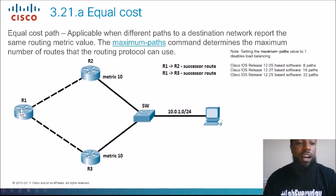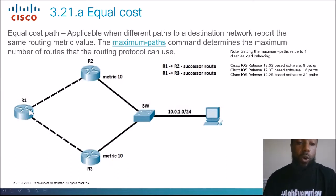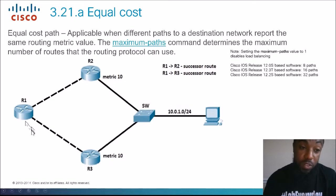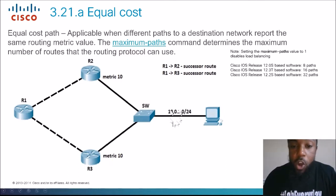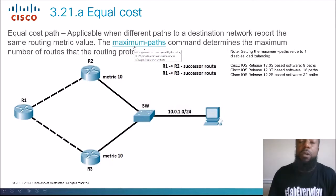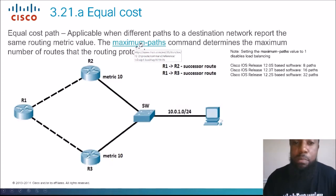Router 1 to Router 2 is a successor route, and Router 1 through Router 3 is also a successor route — both best paths with metric 10. If we set the maximum paths value to six and we have eight paths, the remaining two won't be used. Setting maximum paths to one disables load balancing.